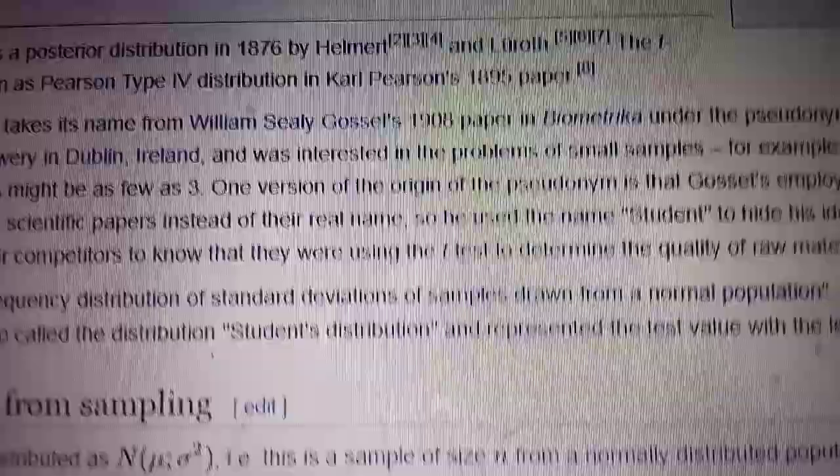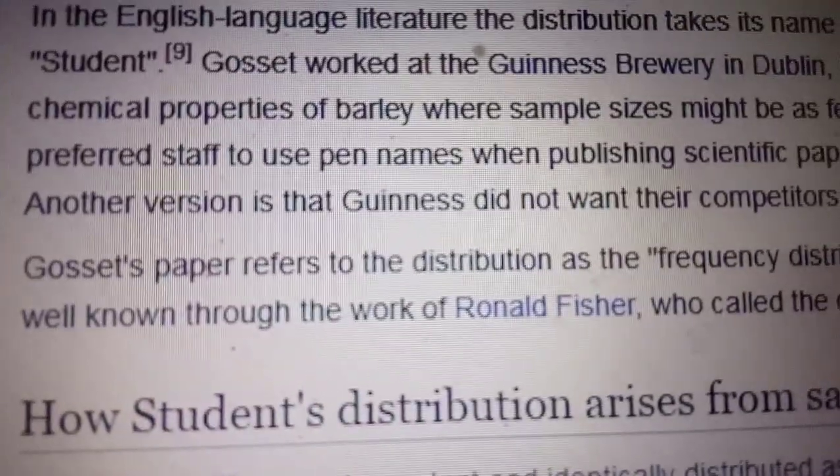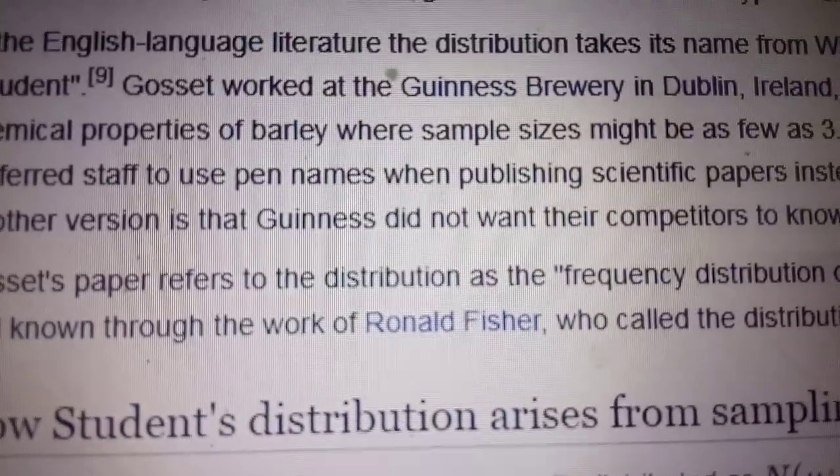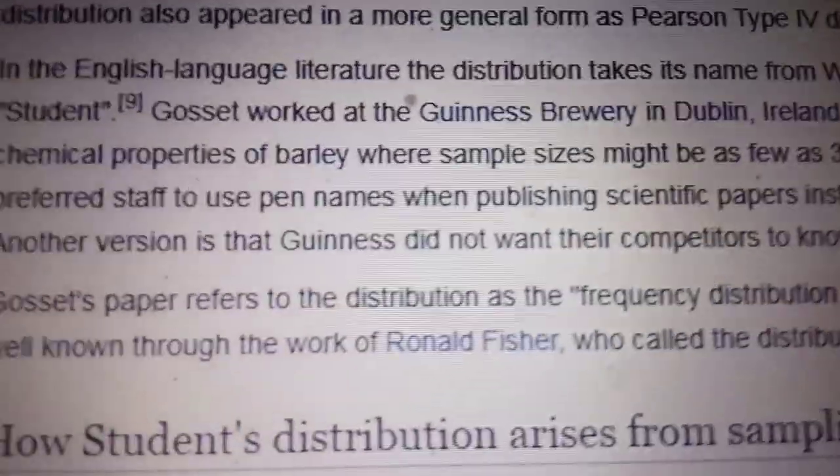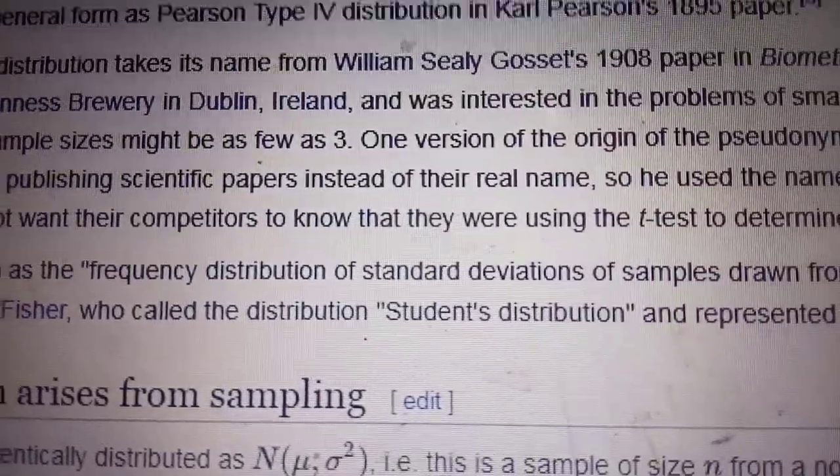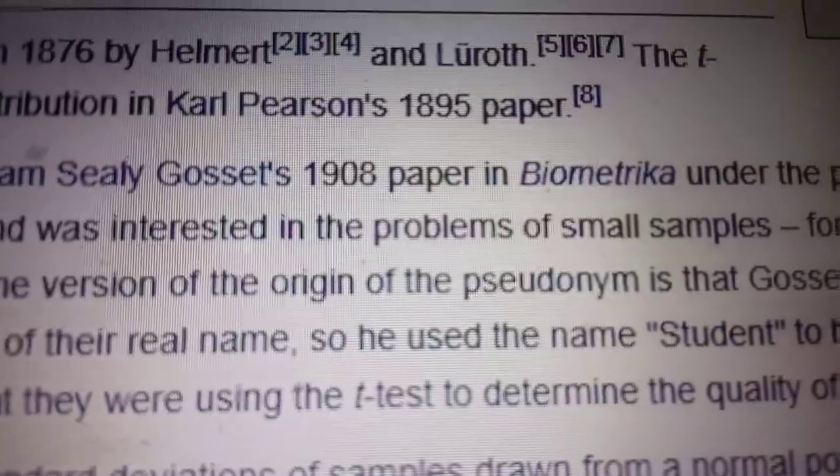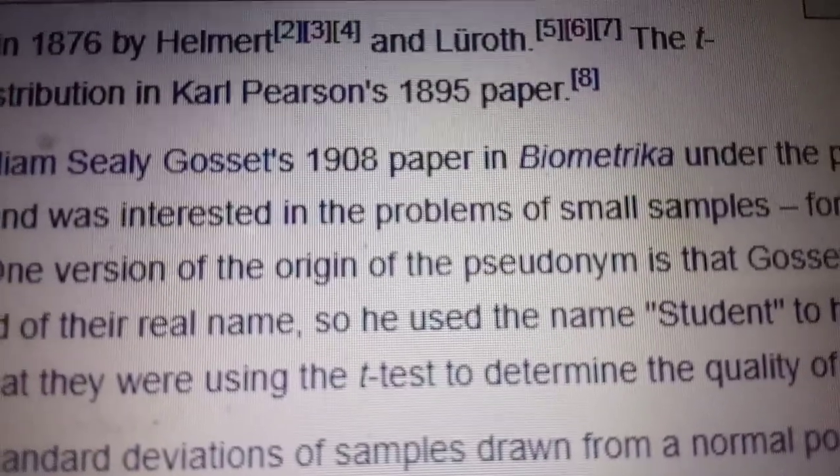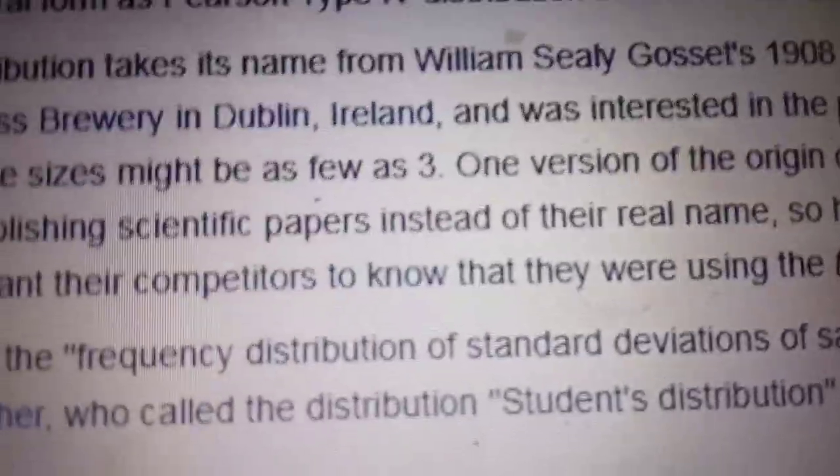One version of the origin of the pseudonym is that Gosset's employers in Dublin preferred the staff to use a pseudonym while publishing research papers. So while publishing his paper in 1908 in a famous journal called Biometrika, Gosset used the Student pseudonym.